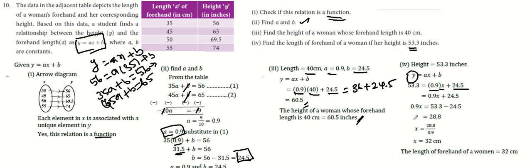0.9x equals 53.3 minus 24.5, which is 28.8. x equals 28.8 divided by 0.9, which equals 32. The length of forehand is 32 centimeters.